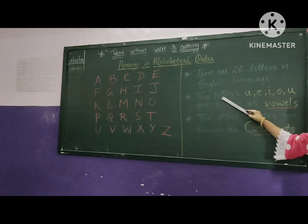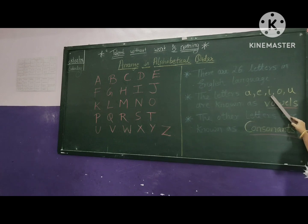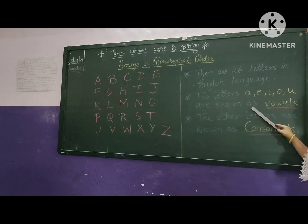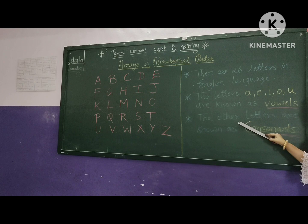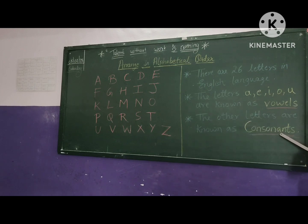The letters A, E, I, O, U are known as vowels. Now what do you mean by consonant? The other letters which are remaining — those are known as consonants.